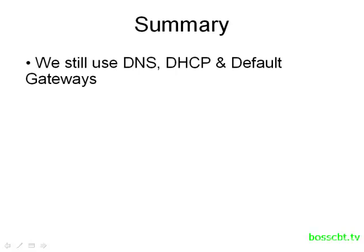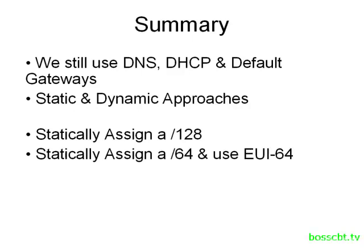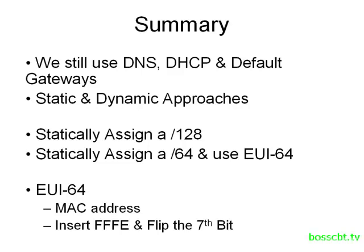Let's review what we covered. Some things are still used in IPv6, like DNS and DHCP, and hosts still need a default gateway. In version 6, we can statically or dynamically assign IP addresses. With the static approach, we can either assign an entire 128-bit address using all 32 hexadecimal digits, or we can assign a prefix and let the device determine its own interface ID using EUI-64 format — which involves splitting the MAC address, inserting FFFE in the middle, flipping the seventh bit, and combining everything into four quartets. That's the static approach to assigning IP version 6 addresses.